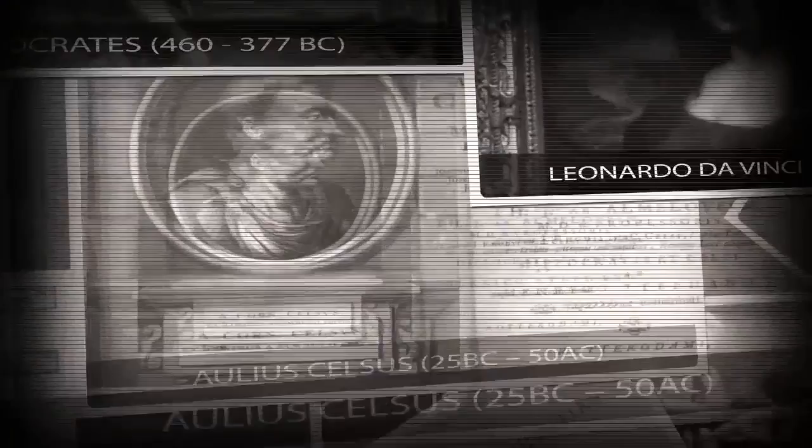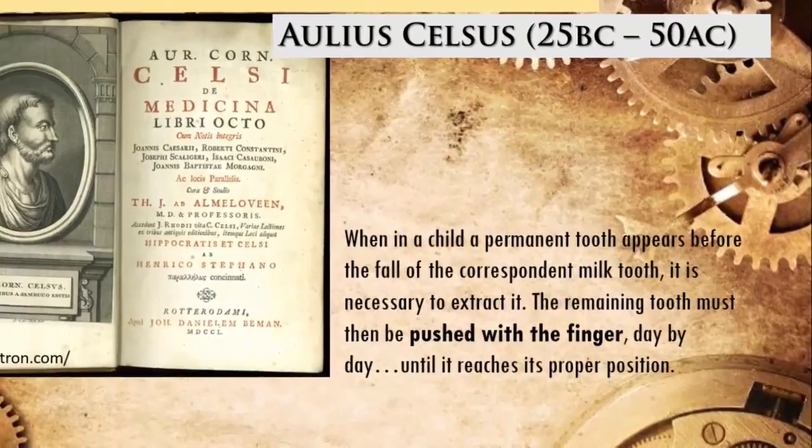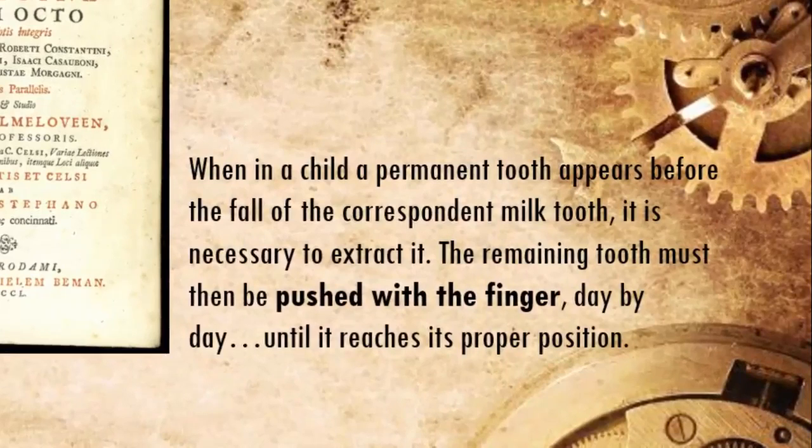Years later, a prominent Roman medical author, Aulus Celsus, reported dental movement in these words: when, in a child, a permanent tooth appears before the fall of the corresponding milk tooth, it's necessary to extract it. The remaining tooth must then be pushed with the finger, day by day, until it reaches its proper position. It was the simplest and cheapest way to move teeth, and somehow it worked — but no one had any idea about how it did.